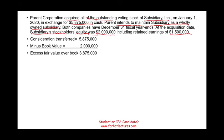Now this excess — we have to explain it. We have to find out if we can explain it; in other words, we have to allocate this excess amount to various assets, whether tangible or intangible. If we cannot assign it to any particular asset or liability, then we assign it to goodwill. Let's see what we have here.